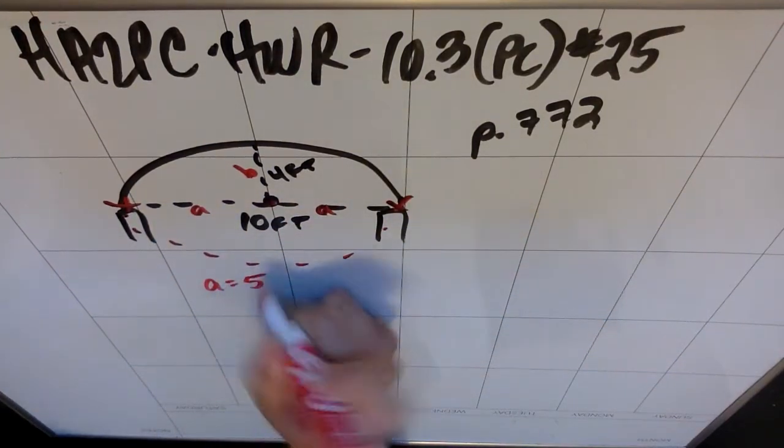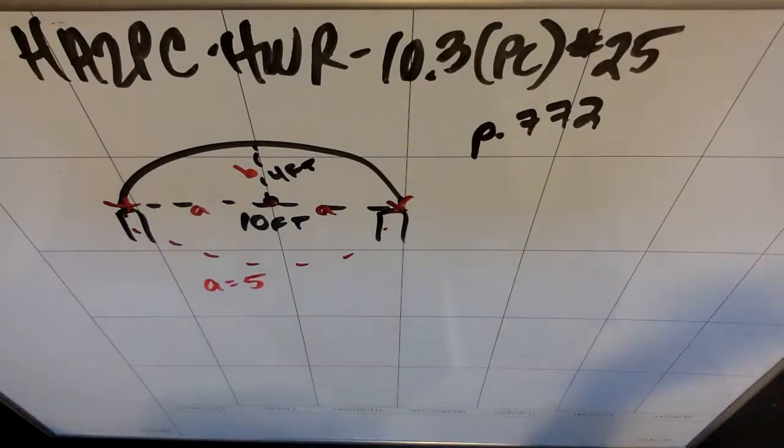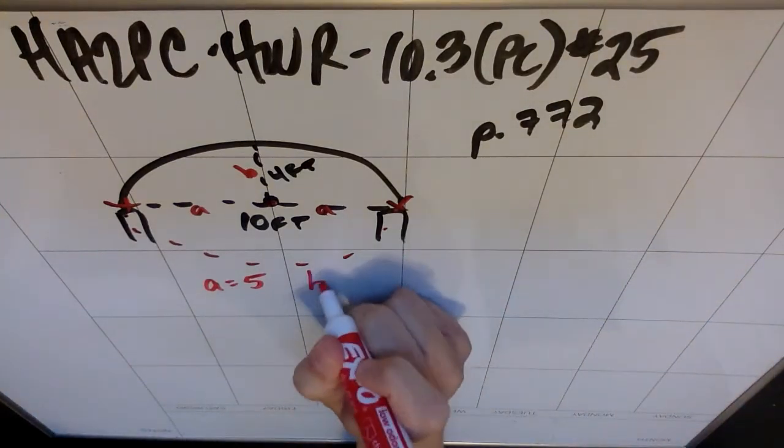So A is 5, because the width of the pillars is 10. So 2A is 10, A is 5. B is 4.